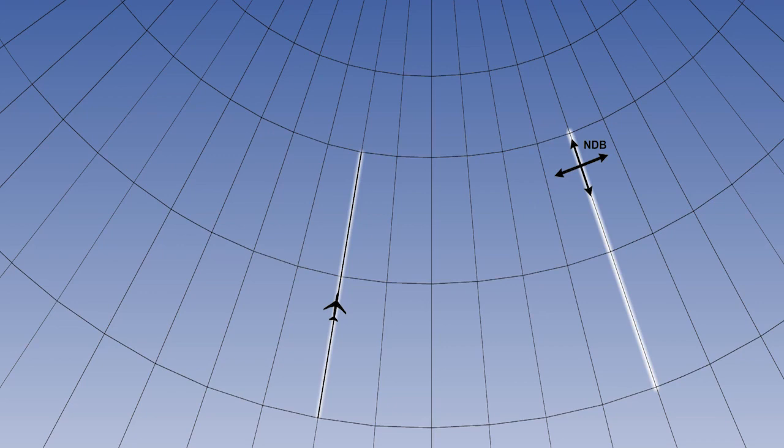However, we will be putting our protractor down at the ground station position. The ground station's meridian is not parallel to the aircraft's meridian. If we simply plot the reciprocal from the local true meridian at the NDB, the bearing will be in error by the amount of chart convergence between the two positions.